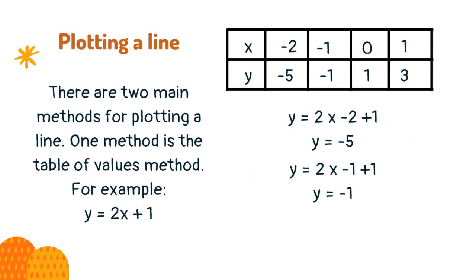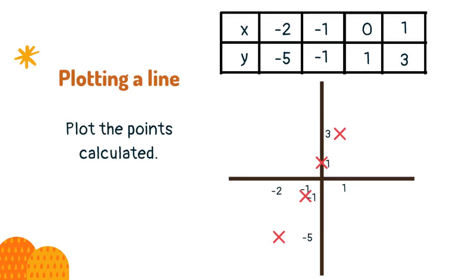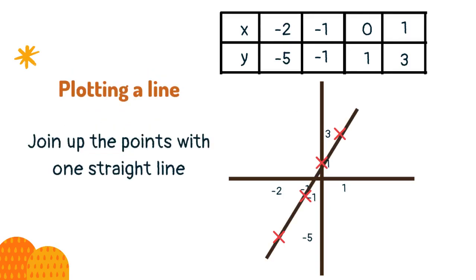There are two main methods for plotting a line. One method is the table of values method. Use the equation to find values of y when x are numbers that you choose. It is best to choose numbers that are both positive and negative to get an accurate line. Plot the points calculated, then join up the points with one straight line.